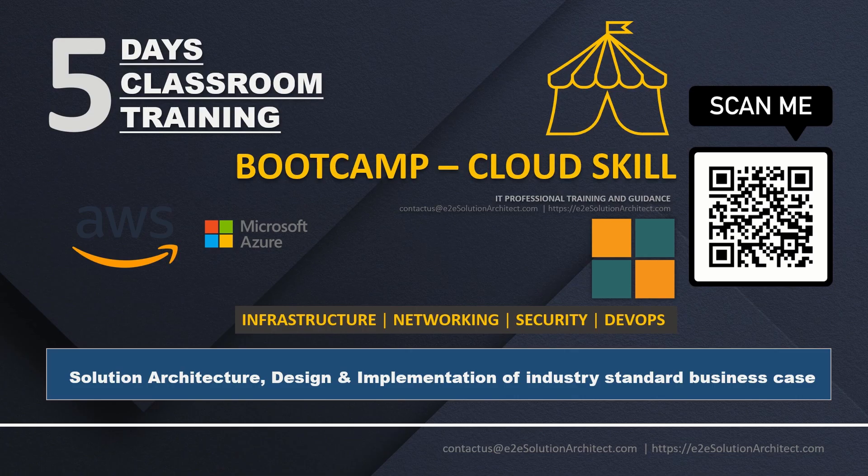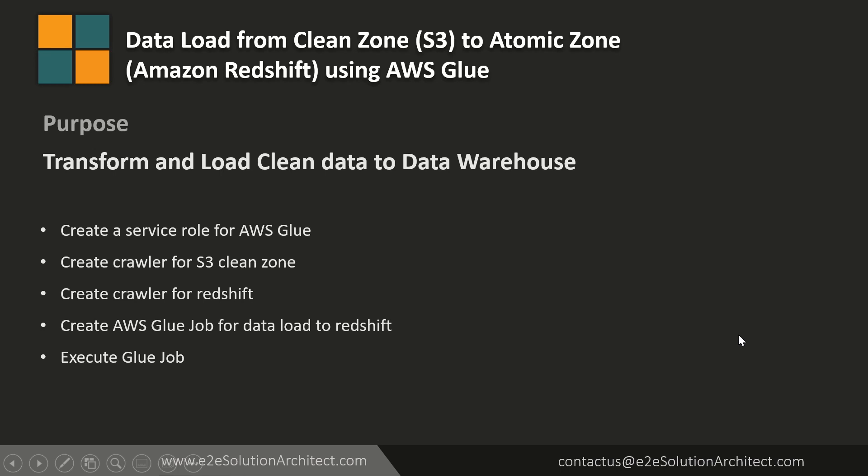Let's jump into our session. I will be talking about data load from clean zone to atomic zone. In our atomic zone we have our data warehouse which is Amazon Redshift, and we will be loading this data through the ETL job — the ETL service in AWS is AWS Glue. Our purpose is to transform and load clean data to the data warehouse. Steps include: create a service role for AWS Glue, create a crawler for S3 clean zone, create a separate crawler for Redshift, create the AWS Glue job for data load to Redshift, and finally execute the Glue job.